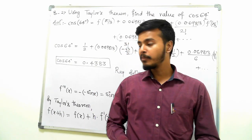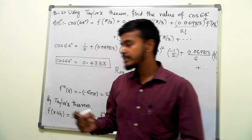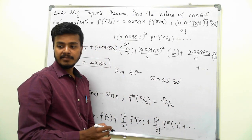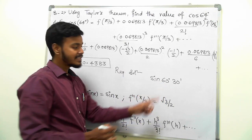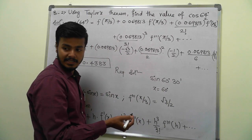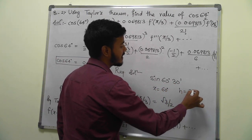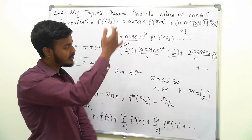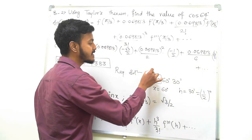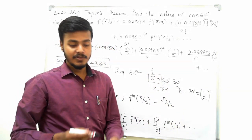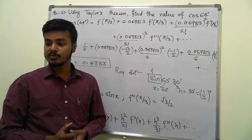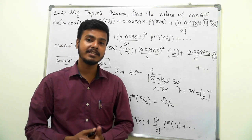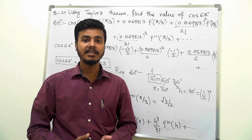Sometimes the problem may give something like sin(60° 30'). In that case, take x = 60° = π/3 and h = 30 minutes = half a degree. Convert that half degree to radians by multiplying by π/180, and proceed the same way with f(x) = sin x. I hope you got the trick for approaching these Taylor series and Maclaurin series problems. Thank you for watching and enjoy learning mathematics.